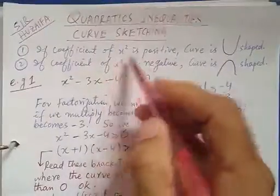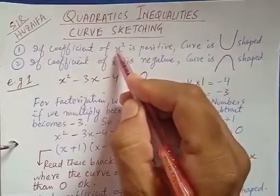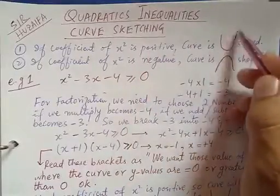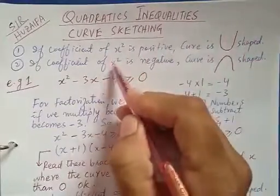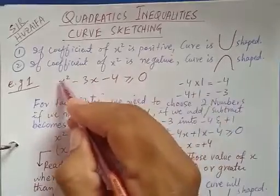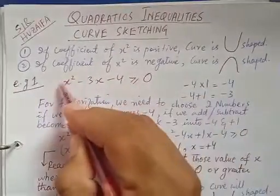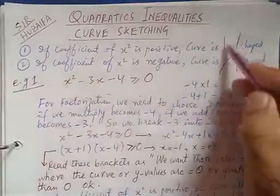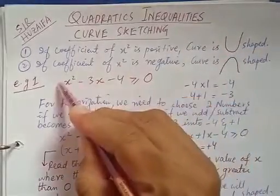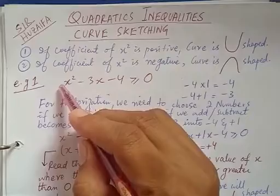In this topic you have to know that if the x-squared coefficient is positive, the curve is like a U-shape. And if the x-squared coefficient is negative, then it is an inverted U-shape.